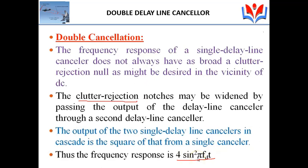The double delay line canceller is a delay line canceller followed by another delay line canceller — a cascaded version of two delay line cancellers. If you take the frequency response of that, it is equal to 4 times sin squared of pi fd. We already learned that for the single delay line canceller, zeroes occur at 1 by T.